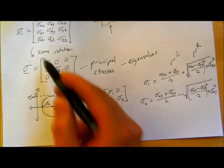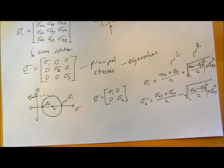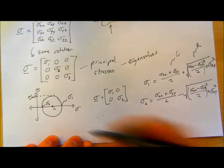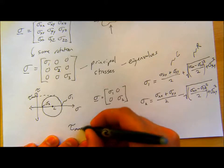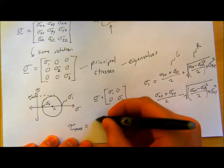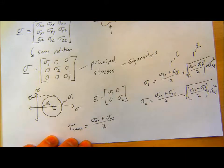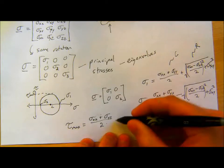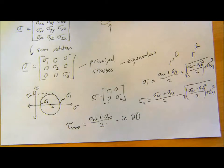So there are a couple of other useful quantities. We have τmax in 2D, which is just (σxx minus σyy) over 2 in 2D. In 3D, we'll talk about that a little bit later.